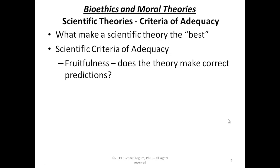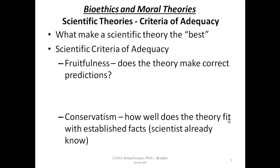There's at least one other major criteria of adequacy for scientific theories. We have a whole bunch of facts that need to be explained. There's a criteria called conservatism, which amounts to figuring out how well a theory fits with the established facts — that is, the established facts that scientists already know, or for that matter, common people already know.